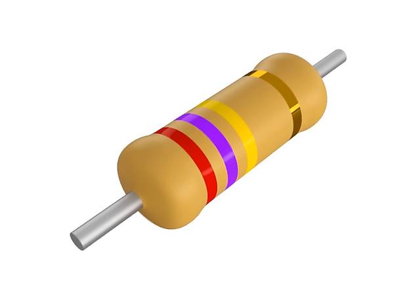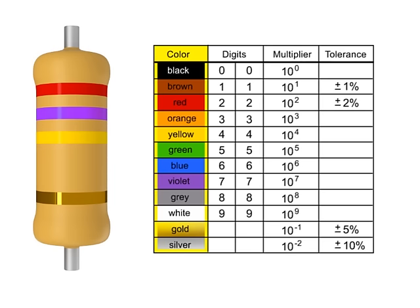Resistors are color-coded with markings or bands that allow you to quickly identify resistance values and tolerance. Using a color chart table will allow you to determine the value of any common 4-band resistor.